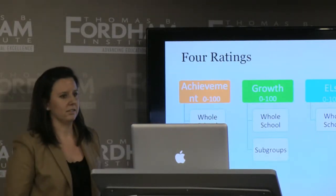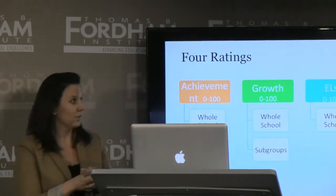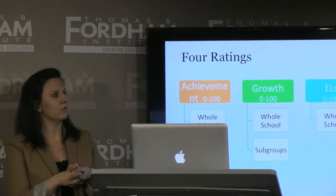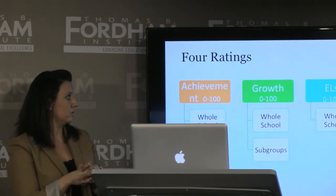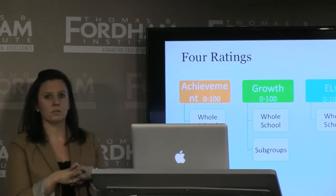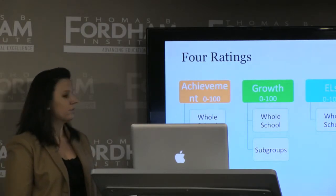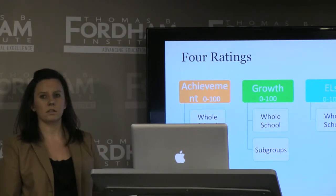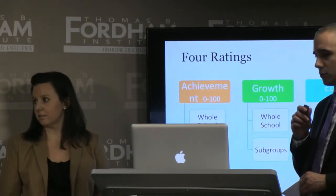While we do not propose a single rating, we have four ratings, each on a scale of zero to 100, with the exception of the ELs category, which are averages of the whole school rating and subgroup ratings. The achievement and growth ratings would be used to identify low-performing schools, while the ELs and other categories would be used to diagnose problems or target interventions for these low-performing schools.